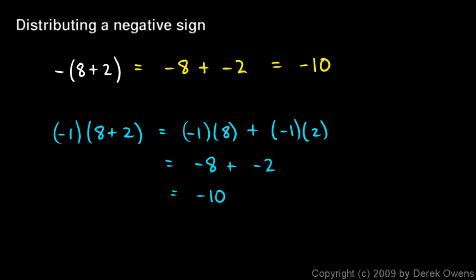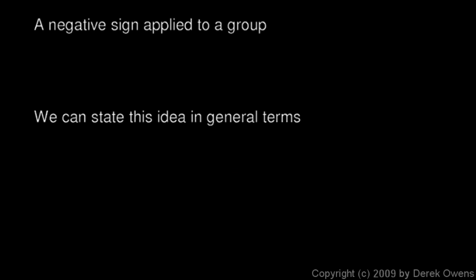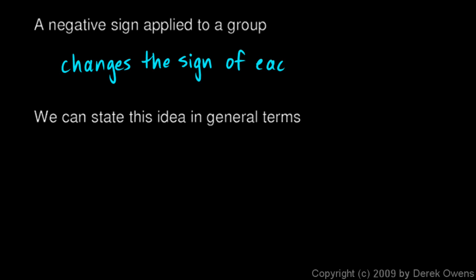But I think it's a little bit easier just to think of it as distributing the negative sign. This negative sign attaches itself to each term in parentheses and changes the sign. So the positive 8 became a negative 8 and the positive 2 became a negative 2. So when distributing a negative sign, just remember this one concept: a negative sign applied to a group changes the sign — the positive or negative — of each term in the group.